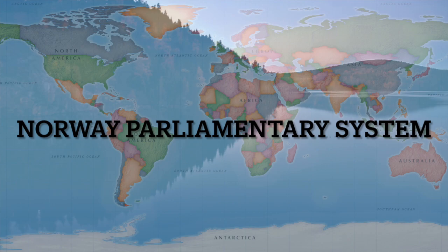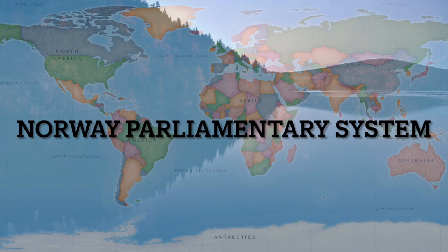Political parties: Norway has a multi-party system, with several political parties represented in the Storting. Some of the major parties include the Labour Party, a centre-left party that has historically been a dominant political force, and the Conservative Party, a centre-right party.